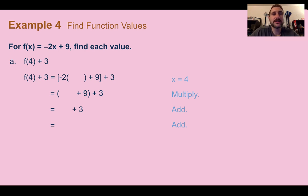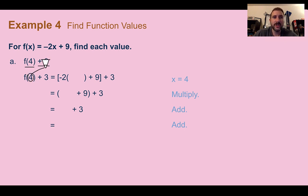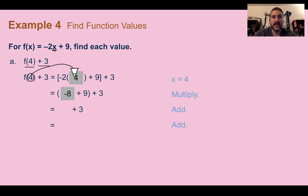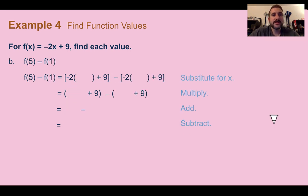Example 4 — find function values: for f of x equals negative 2x plus 9, find f of 4 plus 3. We take the value 4 and substitute it in for x: negative 2 times 4 is negative 8, then negative 8 plus 9 is 1. Now the parentheses are gone, we add 3: 1 plus 3 is 4.